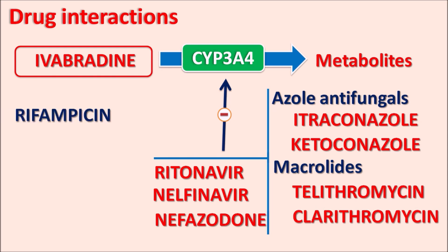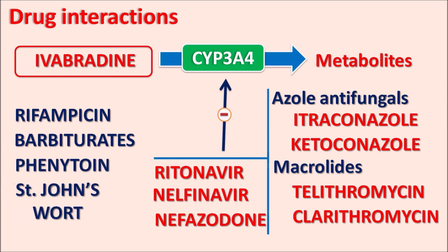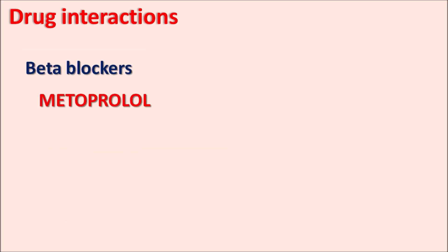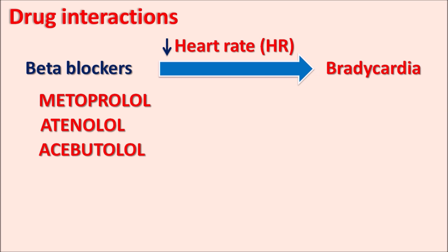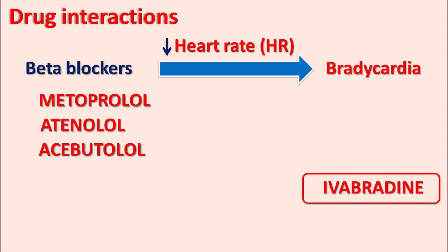Drugs like rifampicin, barbiturates like phenobarbital, phenytoin, and St. John's Wort can induce CYP3A4 activity, thereby increasing metabolism of Ivabradine and resulting in loss of efficacy. Beta blockers like metoprolol, atenolol, and acebutolol mainly act on beta-1 receptors and reduce heart rate. When given along with Ivabradine, this combination produces severe bradycardia, representing a significant drug interaction between beta blockers and Ivabradine.